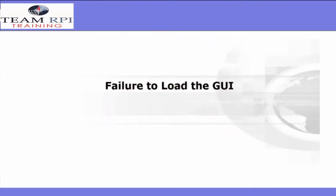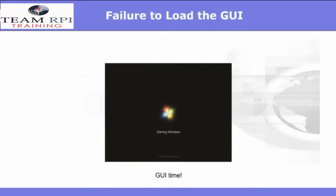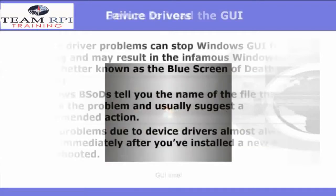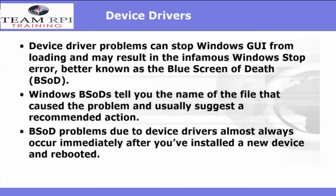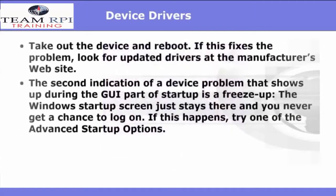Now let's talk about what to do when you have a failure to load the GUI. Most common are device driver problems that will stop the Windows GUI from loading. The Windows Blue Screen of Death will tell you the name of the file that caused the problem and usually suggest a recommended action. However, Blue Screen of Death problems due to device drivers almost always occur immediately after you've installed the device and rebooted. The first thing you should do is take out the installed device and then reboot and see if that fixes the problem.